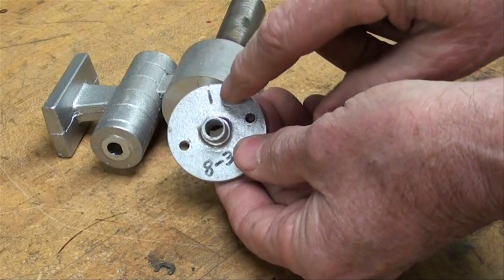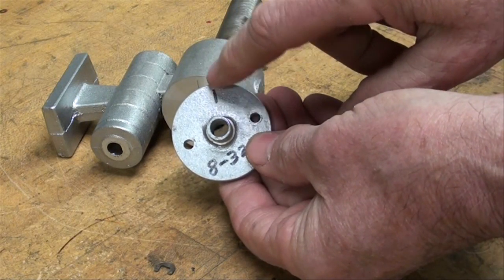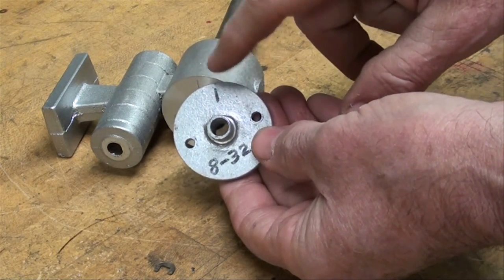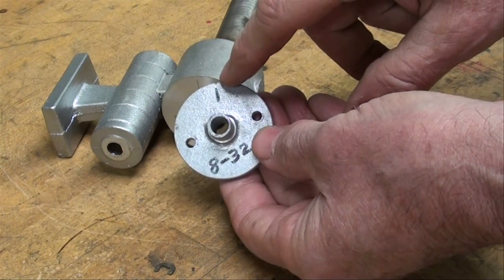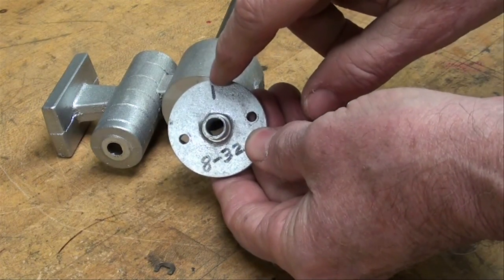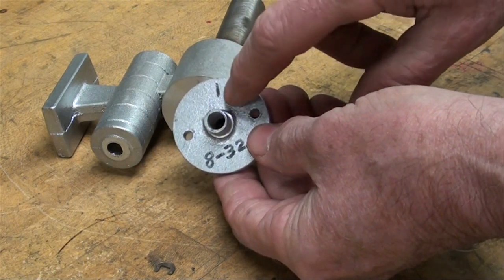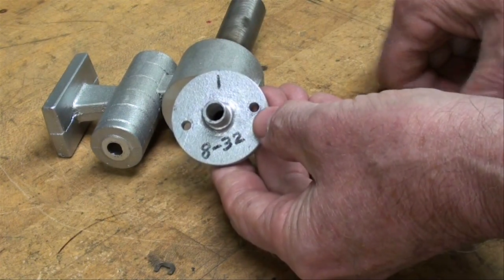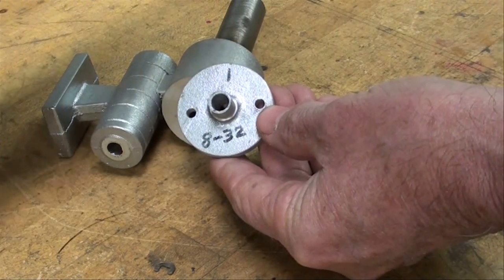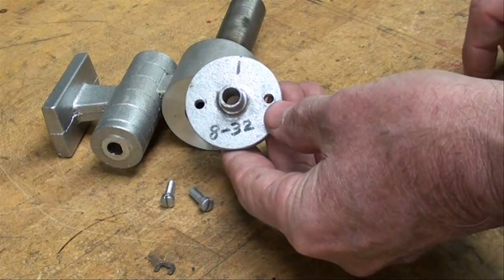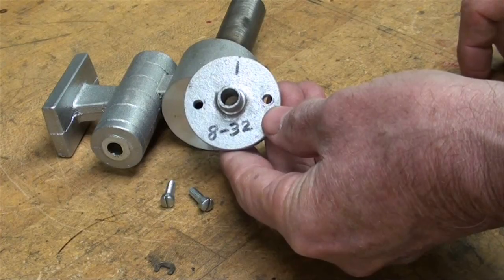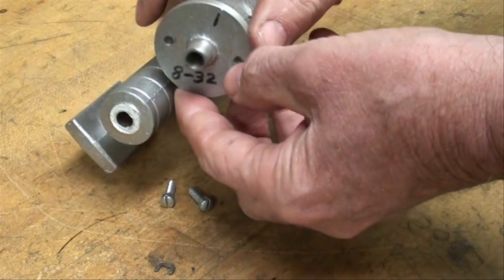Now always make yourself an index mark to indicate that it's going to go up or down or whatever, so you always assemble it exactly the same. I actually have a little bit of a file mark there. Sometimes I center punch them. That'll be the top, and I put a little mark there so you can see it as well. These are going to be 8-32 screws that we're going to use.